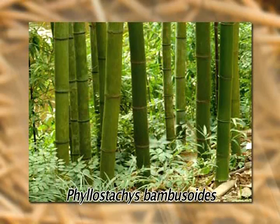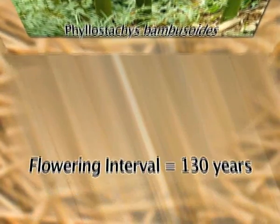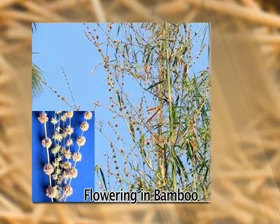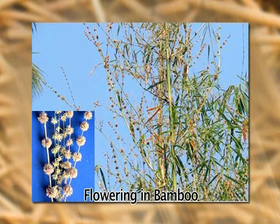For example, Japanese timber bamboo, scientifically named Phyllostachys bambusoideae, has the longest known flowering interval of about 130 years. Bamboos exhibit what is commonly known as gregarious flowering. During such an event, all the plants in a bamboo grove flower simultaneously, regardless of the prevailing environmental conditions.